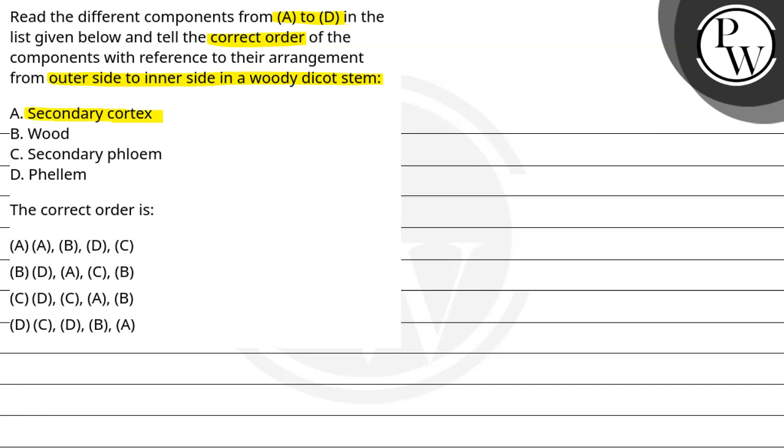A has secondary cortex, B is wood, C is secondary phloem and D is phellum. So the correct order here we have to tell. The key concept here is secondary growth.